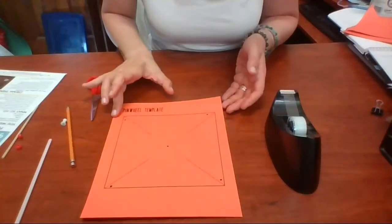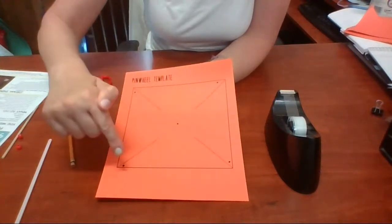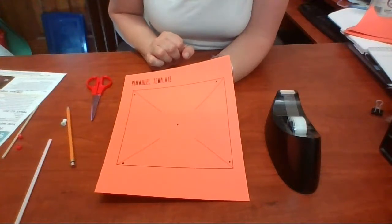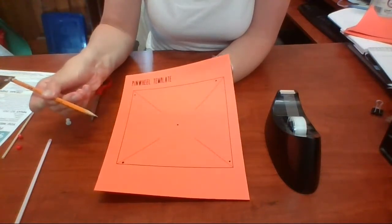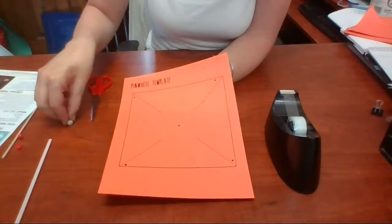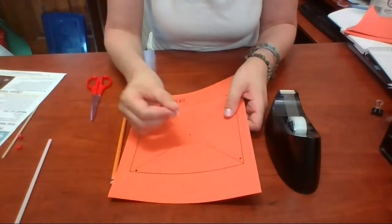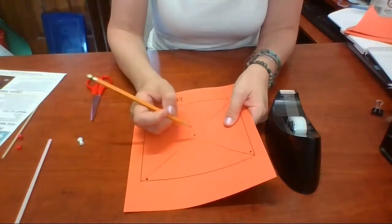I would suggest you get started on getting your pinwheel created by poking holes where the five black dots are marked. I would start off with a really sharp pencil. You can poke a hole with that. My pencil isn't super sharp so I've got a little thumbtack and I'm going to start a teeny little hole with that.